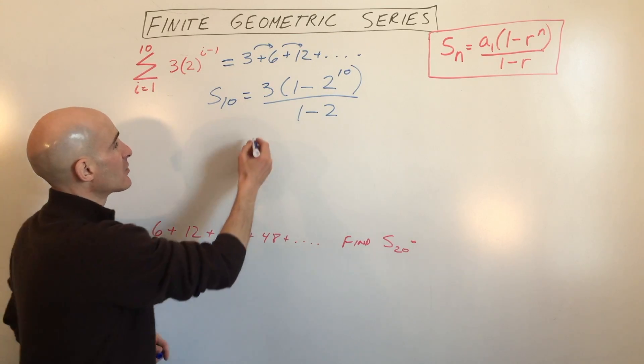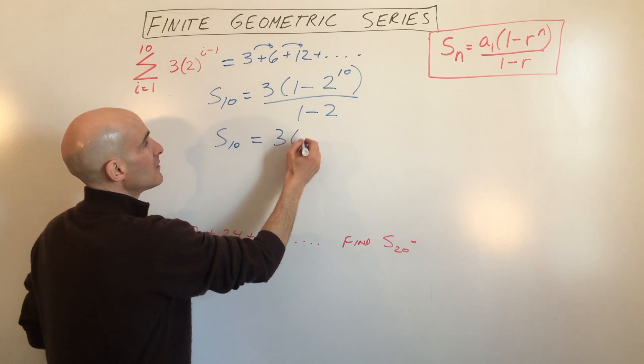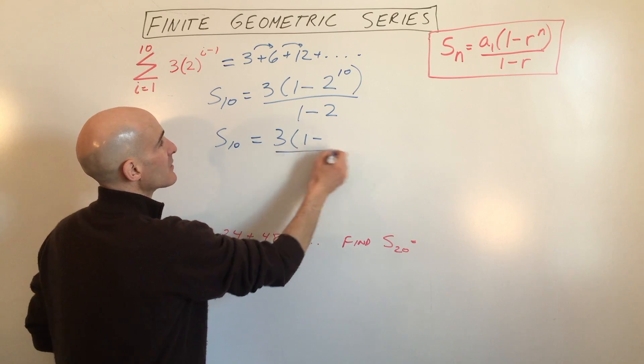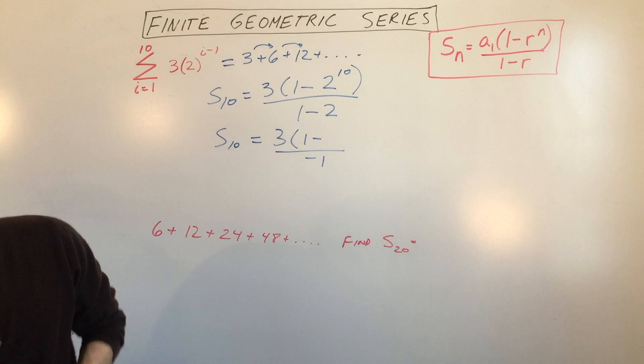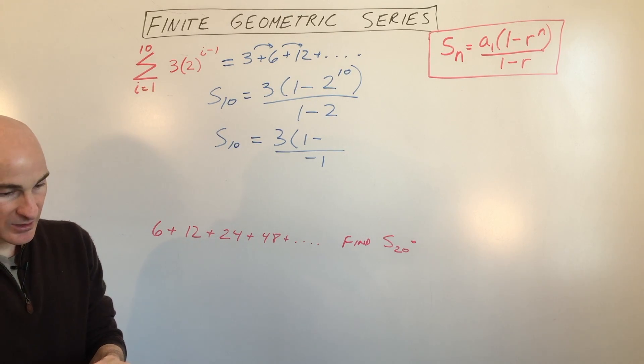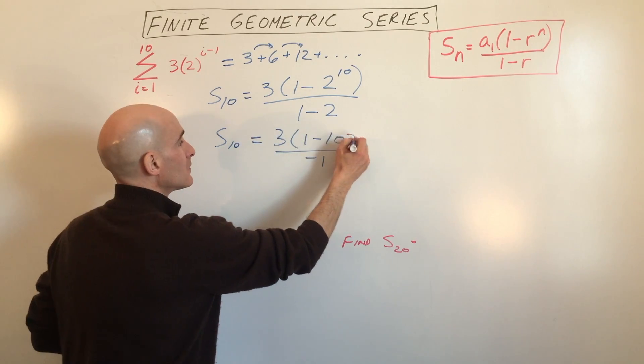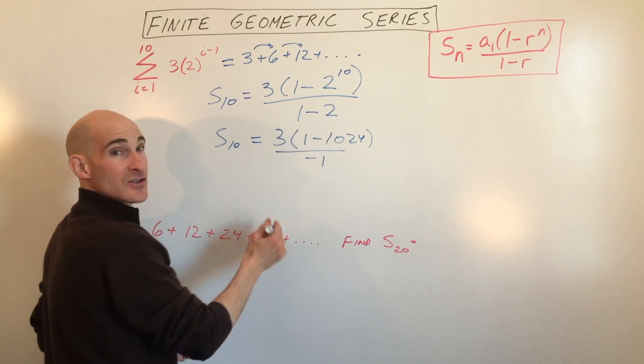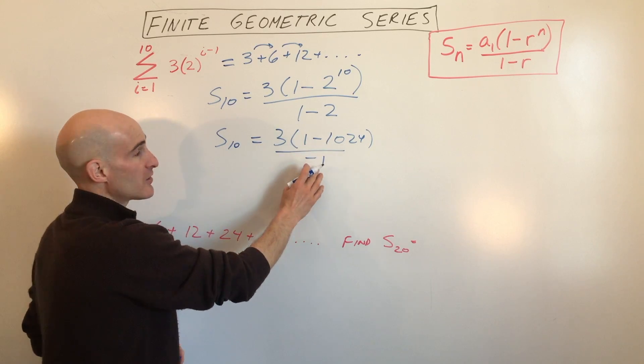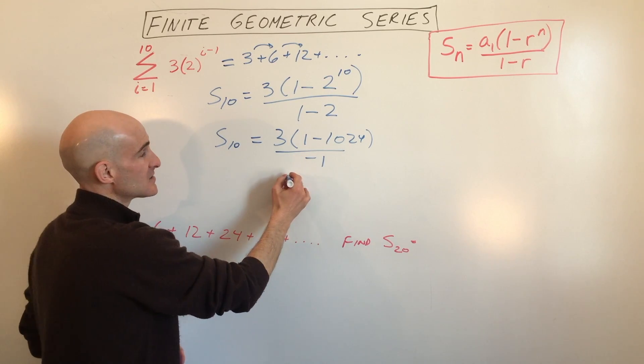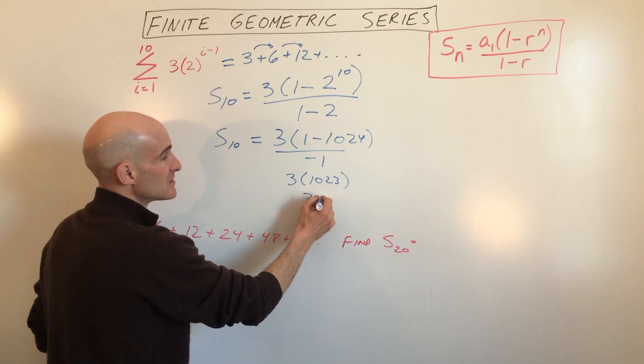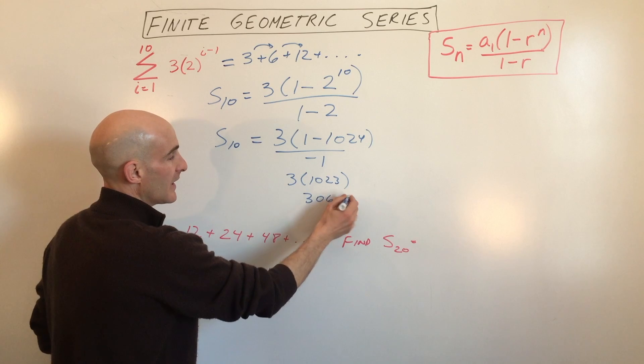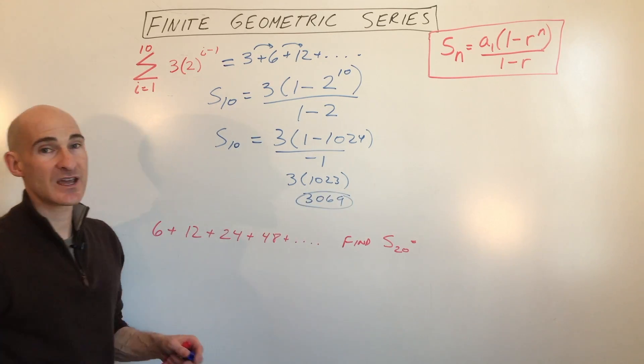So let's see if we can simplify here. This is going to be 3 times 1 minus 2 to the 10th. I'm going to do that in the calculator. 1 minus 2 is negative 1. So 2 to the 10th is how much? Let's see here. We've got 2 to the 10th power, 1,024. 1 minus 1,024 is negative 1,023. Divided by negative 1 makes it a positive 1,023. If we multiply those together, we get 3,069. So that's the sum of the first 10 terms.